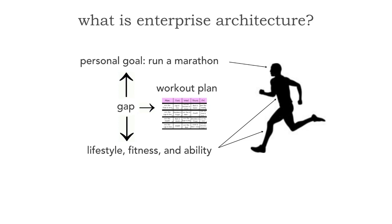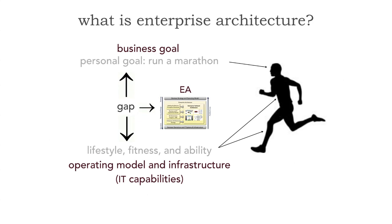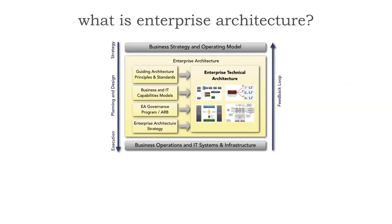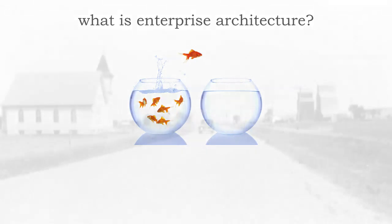What does this have to do with enterprise architecture? Let's take that personal goal and make it a business goal — for example, to be the number one online insurance company in the nation. As a company, I analyze my operating model, my infrastructure, my IT capabilities, and from the goal over to the capabilities I have, that forms a gap. In business, we generally don't have a workout plan, but this is exactly where EA — enterprise architecture — fits in. The one single, most important thing about enterprise architecture in terms of goals is really to facilitate change. If there were no change in business, we really wouldn't need enterprise architecture. But businesses undergo change all the time.